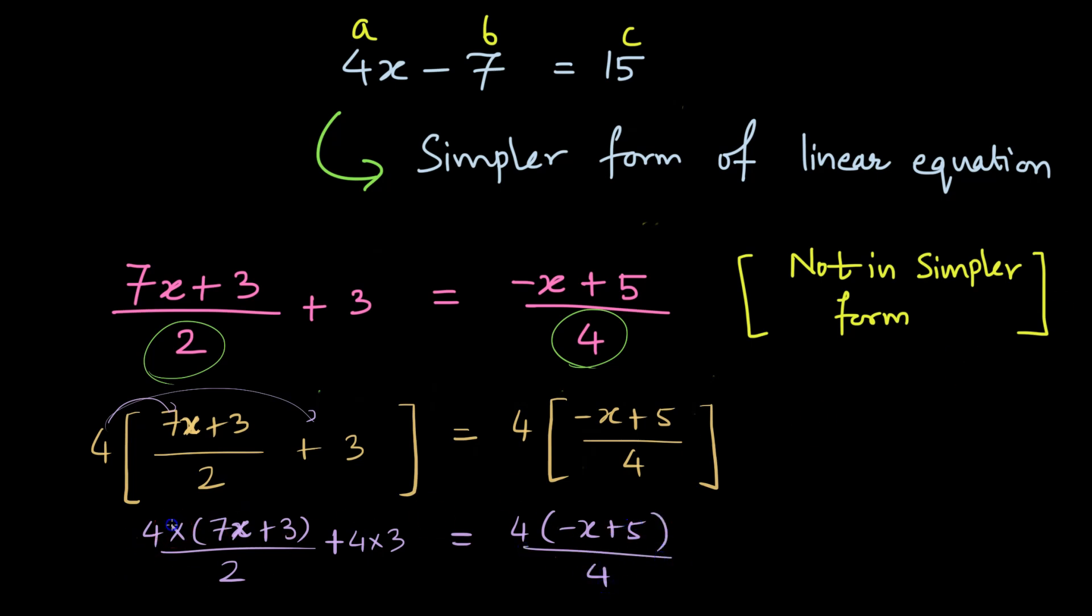Now look at this fraction on the left. 4 is multiplying 7x plus 3 and it's getting divided by 2. So can we divide this 4 by 2 and we get 2 here. And similarly on the right hand side the 4 gets cancelled with 4.